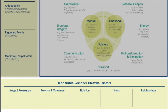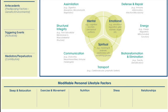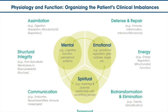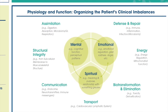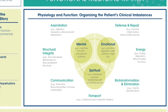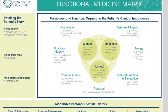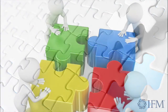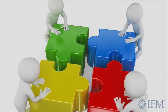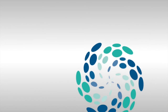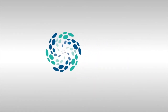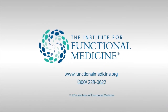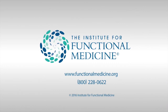Filling out the matrix points the way to treatments that address the underlying causes of each patient's dysfunction. The functional medicine matrix serves as a roadmap to identify the pertinent parts of the patient's story, to explain how and why they are ill, and to design an individualized treatment plan. With the matrix, we can solve the puzzle of chronic disease together with our patients.